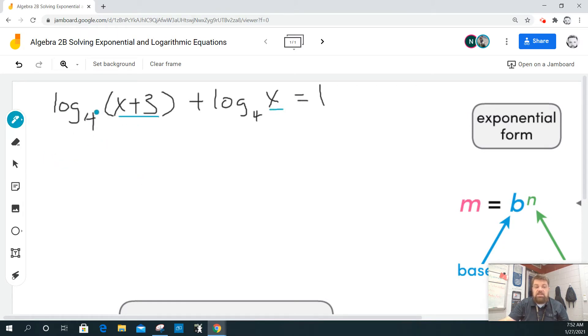So, because they're the same base, I can combine them by saying that this is the same as the log base 4 of the quantity x times x plus 3 is equal to 1.